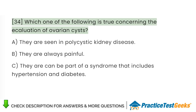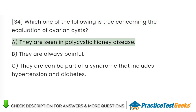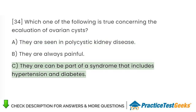Which one of the following is true concerning the evaluation of ovarian cysts? A. They are seen in polycystic kidney disease. B. They are always painful. C. They can be part of a syndrome that includes hypertension and diabetes.